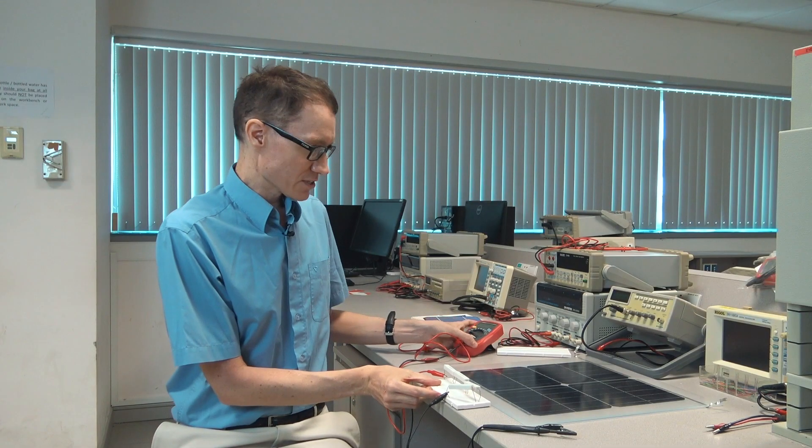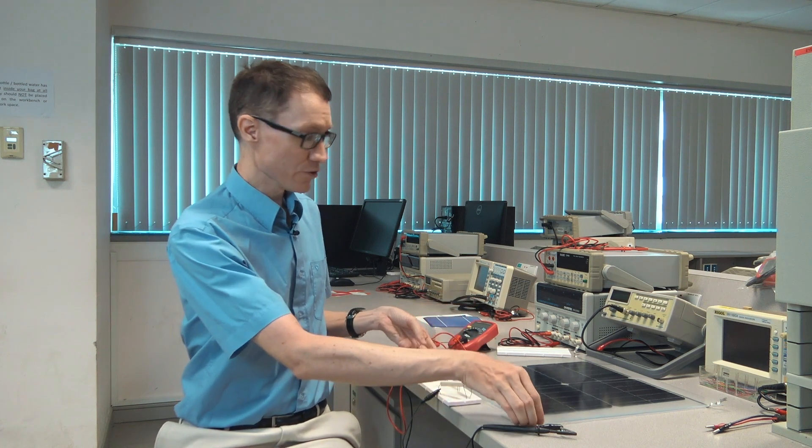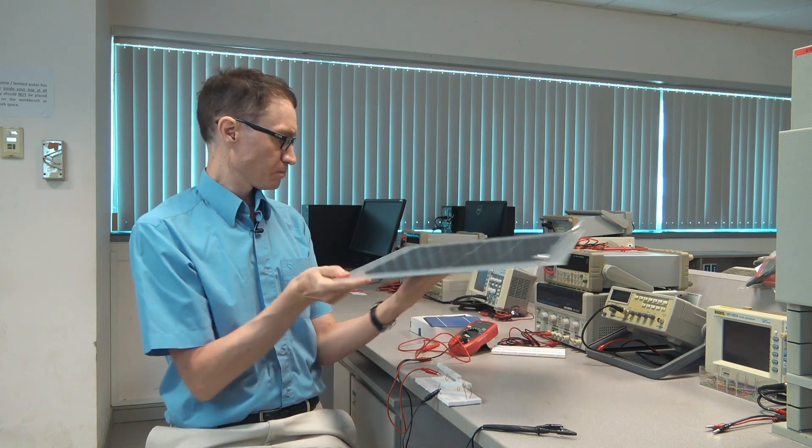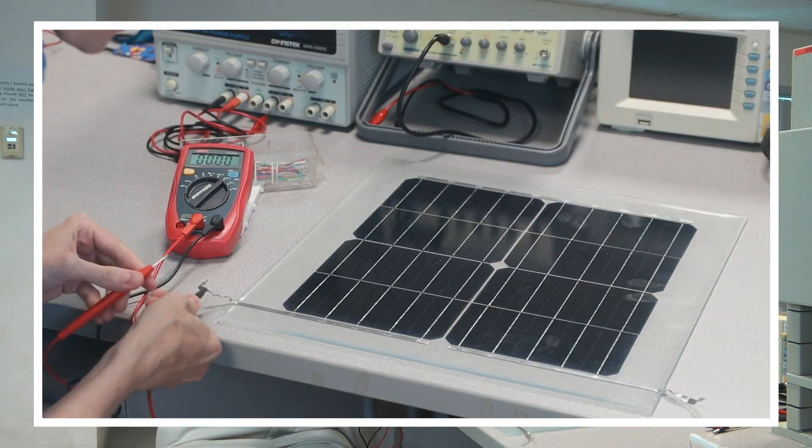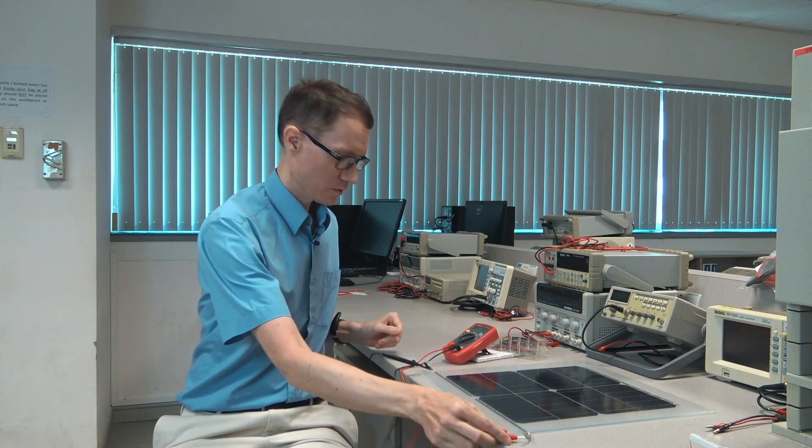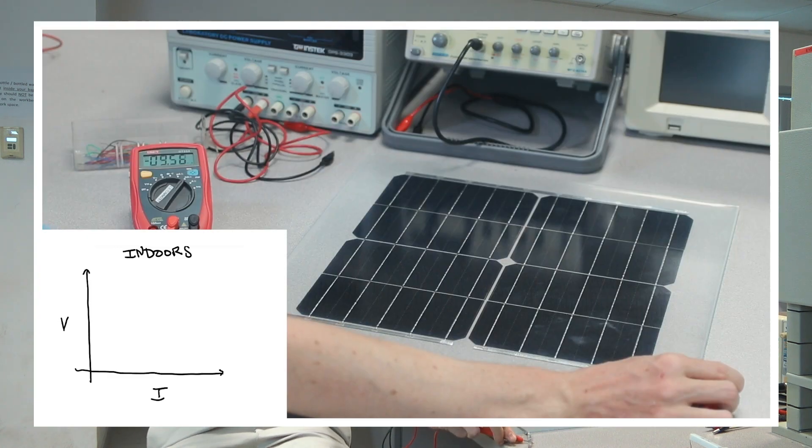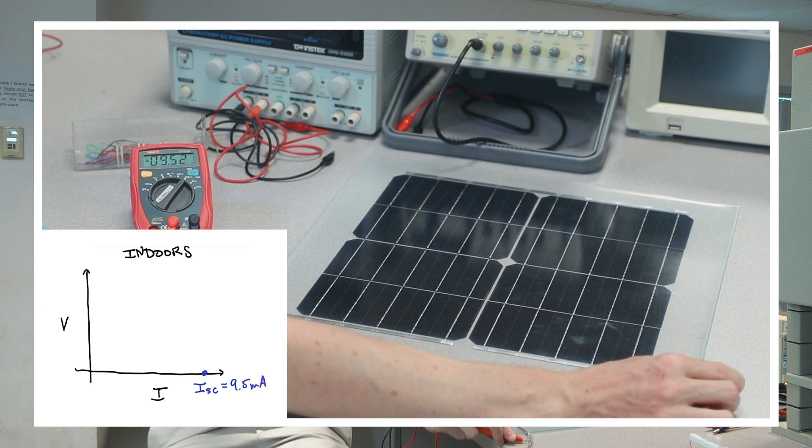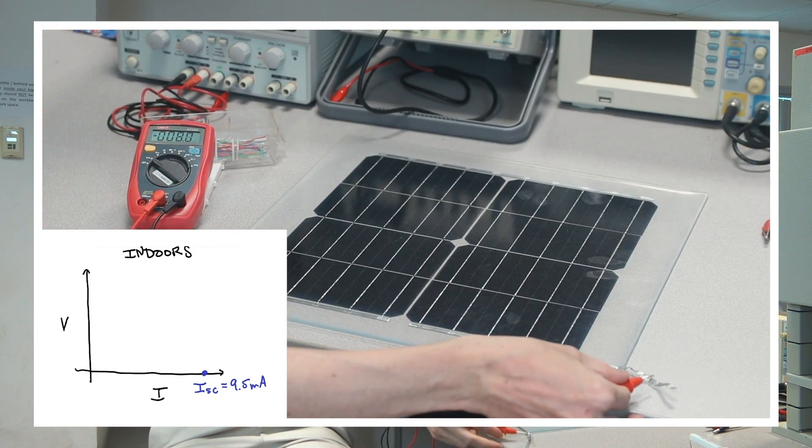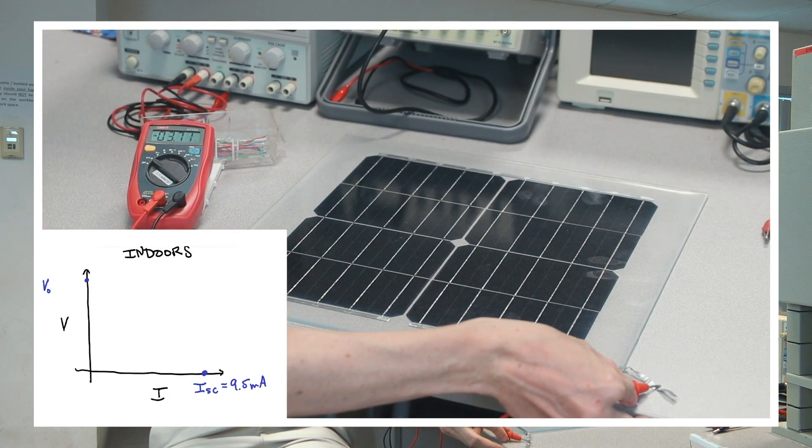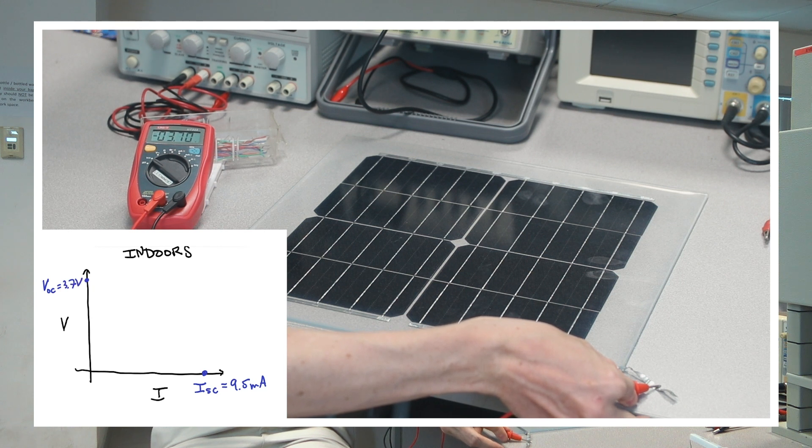I'm going to first characterize this solar cell indoors before we take it outside. I have the multimeter here set to milliamps, so we're indoors, there's not going to be very much power. I'm going to measure the short circuit current of this solar panel. So it looks like we're getting about 9.5 milliamps for the short circuit current. I'm going to now switch it to voltage. Let's measure the open circuit voltage. And I see 3.7 volts.